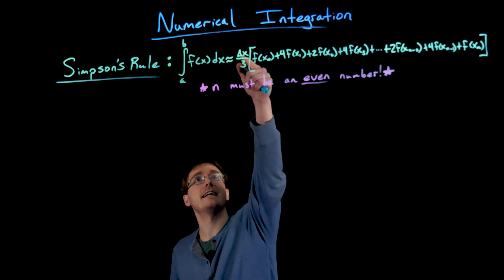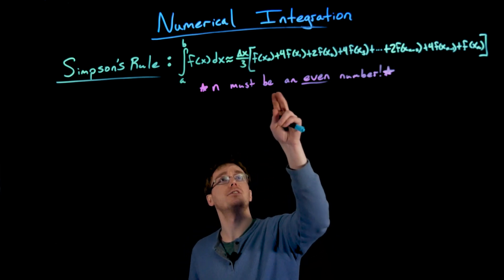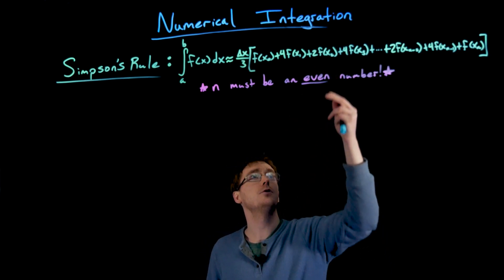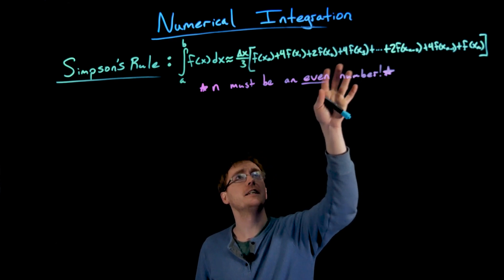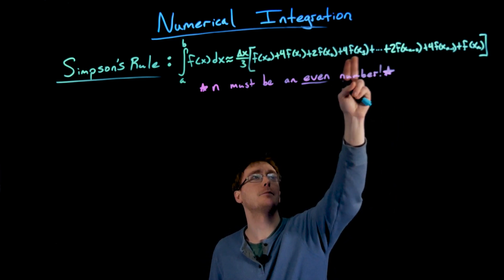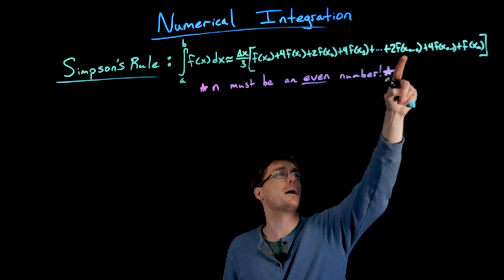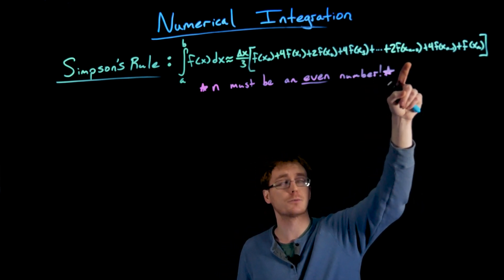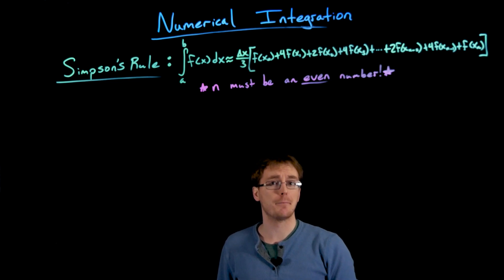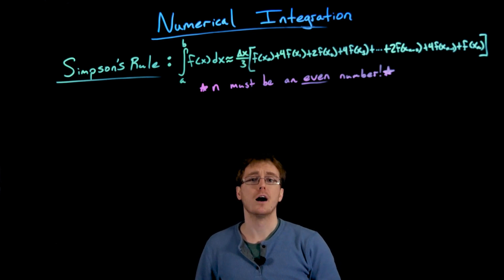Our formula is we're going to take delta x and divide it by 3, and multiply every single term in this sum by that delta x over 3 value. Our sum is going to be f of x₀ plus 4 times f of x₁ plus 2 times f of x₂ plus 4 times f of x₃. Then we have this nice alternation between 2 and 4 times our f of x values until we get near the end. The term right before 2 times f of xₙ₋₂ would be 4 times f of xₙ₋₃. After 2 times f of xₙ₋₂, we add 4 times f of xₙ₋₁. And then the very last term is just f of xₙ with no multiple.